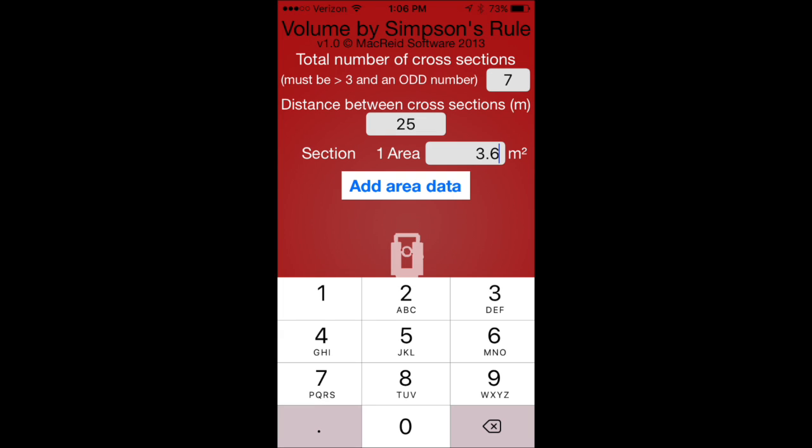And now we can enter the offset for each cross-section. Number one is 3.6, add area data. Two is 5.0, add area data. Three is 6.5, add area data. Four is 5.5, add area data. Five is 7.3, add area data. Six is 6.0, add area data. And seven is 4.0, add area data.